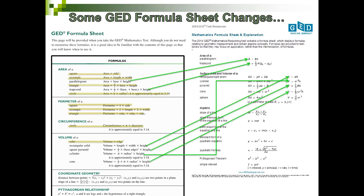A participant noted that the trapezoid formula shows base sub one and base sub two — I believe that's just an error in the font during transcription. It is base one plus base two, with an addition sign. Thank you for that catch.